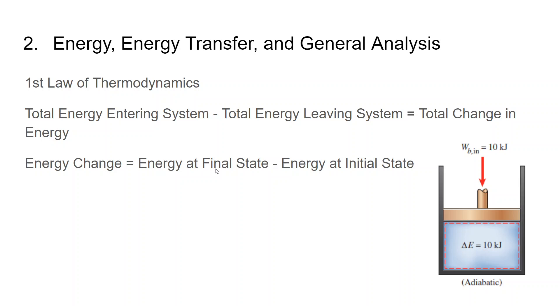Now, we know that the first law of thermodynamics says that there's a conservation of energy. So, quite common sense. You just need to know that total energy entering the system minus total energy leaving the system equals to total change in the energy. And total change in energy is energy at final state minus energy at initial state. As you can see over here, if I apply a work of 10 kilojoules, that means my fluid inside will gain 10 kilojoules of energy. Assuming this is an adiabatic process, so no heat escape from the boundary.